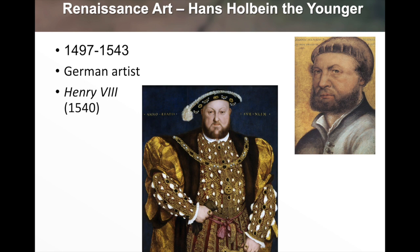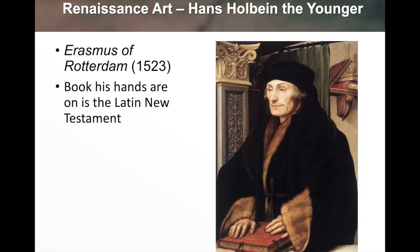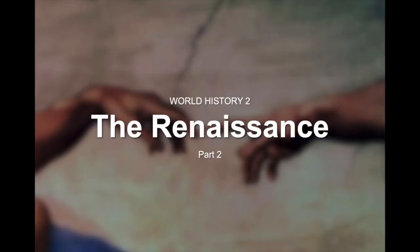Hans Holbein the Younger, 1497 to 1543, was a German artist who painted Henry VIII in 1540 — probably the most famous portrait of Henry VIII. There is great detail in the robe and costume. He also painted Erasmus of Rotterdam in 1523, which we saw in the last powerpoint, depicting Erasmus with his hands on the Latin New Testament with great detail in the fur, hands, and face. That's it for Renaissance Part Two. Next time we'll begin our look at exploration and the explorers.